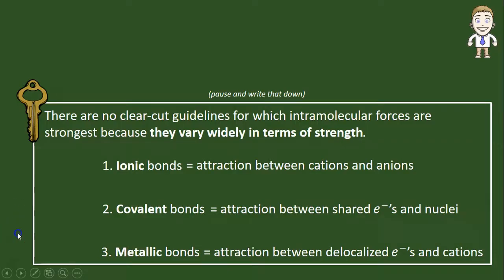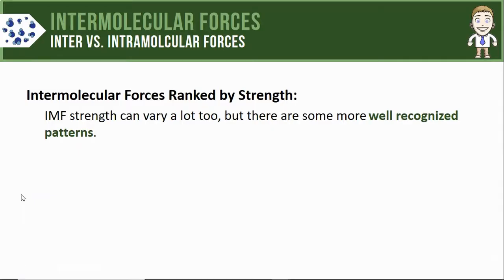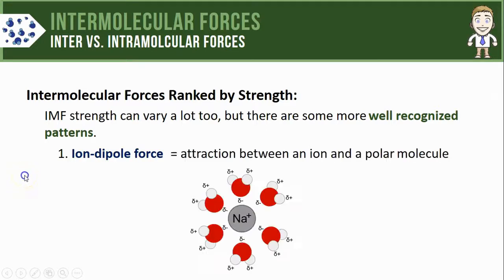Make sure you take a moment and write them all down. Finally, let's make an official list of the intermolecular forces you'll typically see in AP Chemistry. We'll rank these by strength as well, and while there's lots of variation, there are some well-recognized patterns in terms of which intermolecular forces are stronger or weaker. At the top of the list, taking the position of strongest intermolecular force, is something called an ion-dipole force.